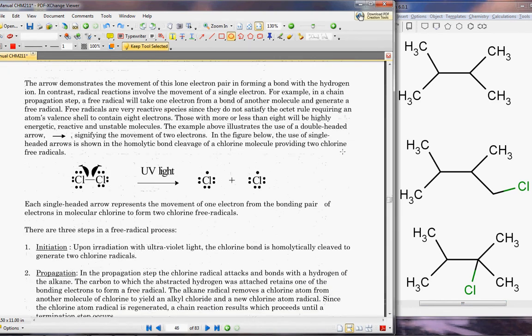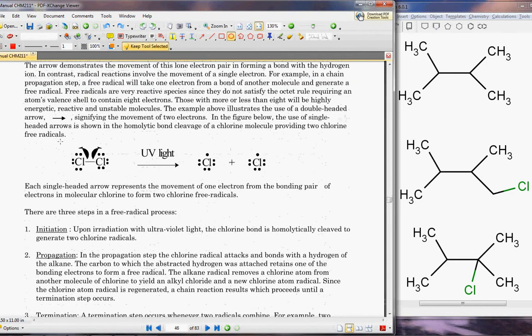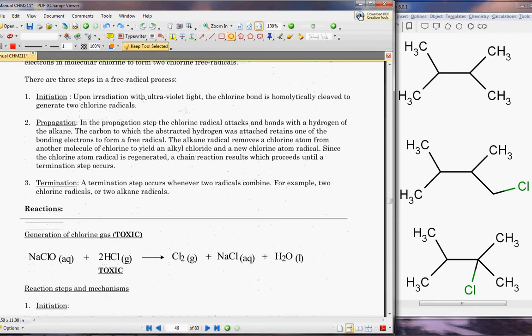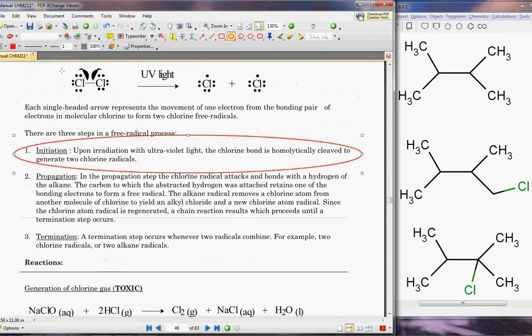If we scroll down, essentially it's saying when you react chlorine gas with UV light, you excite it, it breaks up into free radicals. Now chlorine gas is a very toxic compound, so we will not be using chlorine gas for our free radicals in this lab. Here we have three steps in the free radical process.